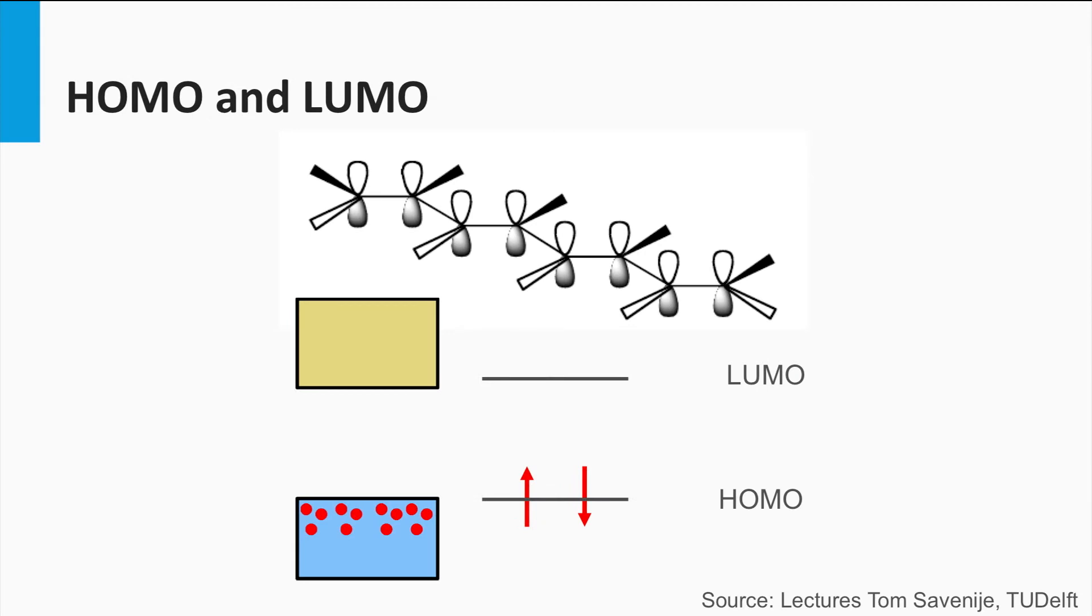As the conjugated molecules are getting longer, the HOMO and LUMO will broaden and act like a kind of valence and conduction band. The energy difference between the HOMO and the LUMO can be considered as the bandgap of the polymer material.